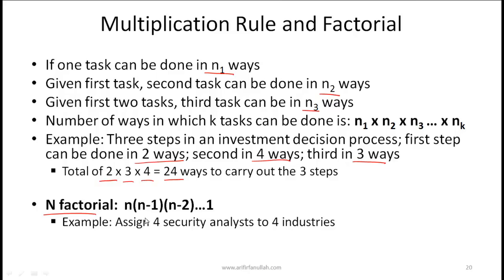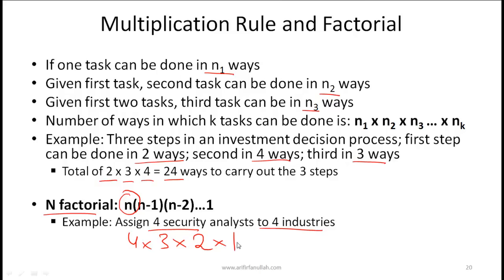The factorial concept arises when assigning items to distinct slots. If you assign four security analysts to four industries, the first can be assigned in 4 ways, the second in 3, the third in 2, and the last in 1. So the total number of assignments is 4 × 3 × 2 × 1 = 24.